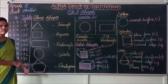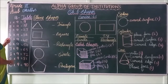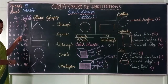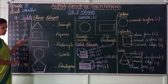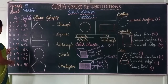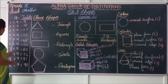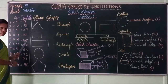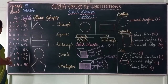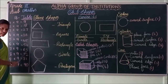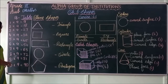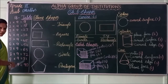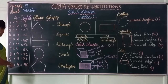Should we recall once, children? Listen carefully. 1 nine is 9. 2 nines are 18. 3 nines are 27. 4 nines are 36. 5 nines are 45. 6 nines are 54. 7 nines are 63. 8 nines are 72. 9 nines are 81. 10 nines are 90.